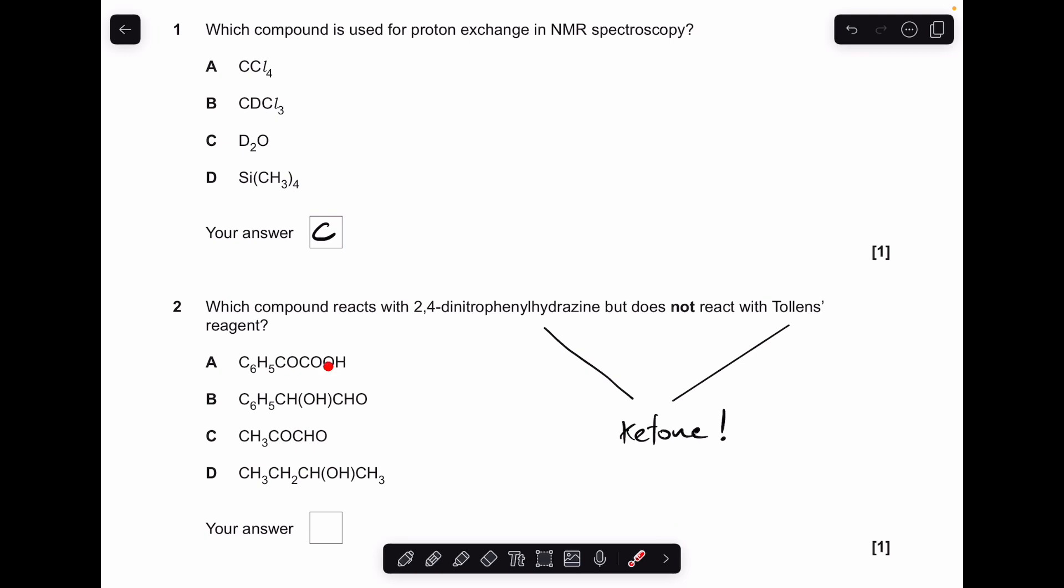Moving on to number two. The functional group that reacts with 2,4-DNP but not with Tollens is a ketone. So what I'm going to do is identify the functional groups in these molecules and then we'll be able to work out what the answer is.